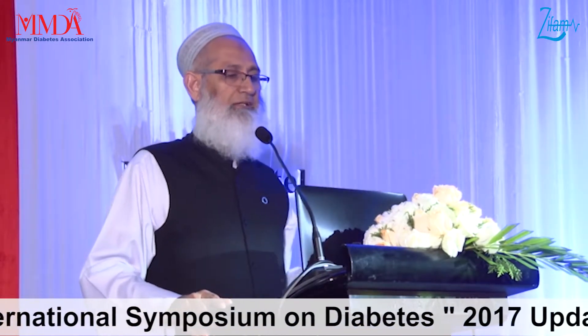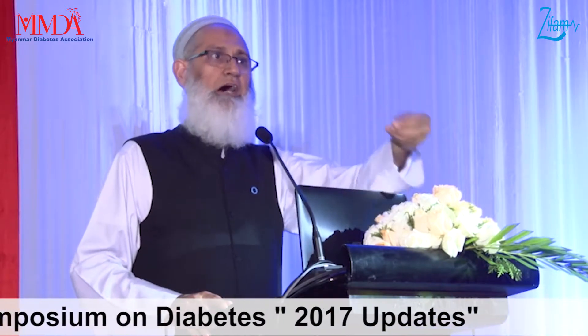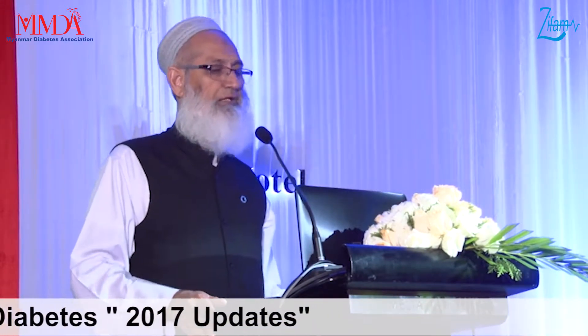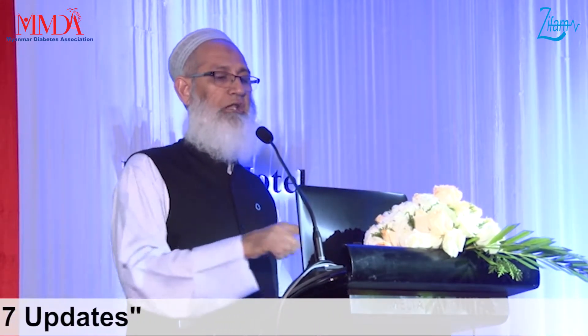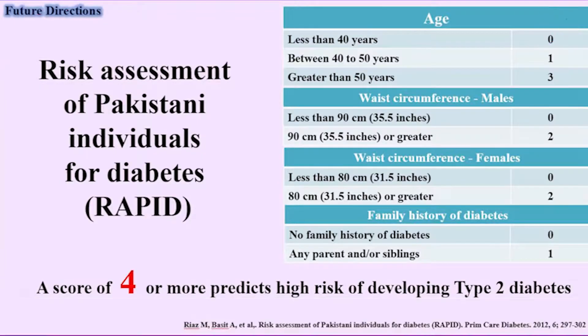This score is very valid for Pakistan. It is only a 30-second score — each of us in the audience can find out whether we are at risk of developing diabetes or not. We all know our ages: if less than 40, mark zero; if between 40 to 50, mark one; if more than 50, mark three. Then waist circumferences — men and women know their waist circumferences — you are either zero or two.